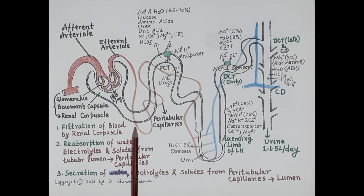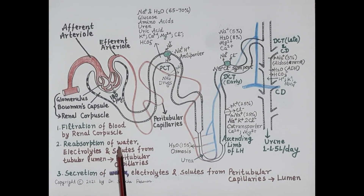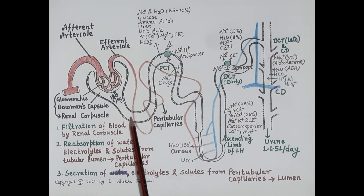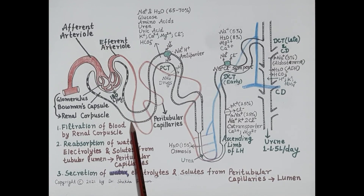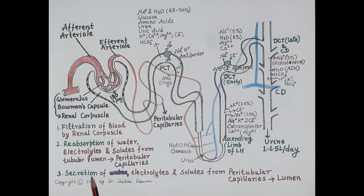This process is called selective reabsorption. Selective reabsorption is the reabsorption of water, electrolytes, and solutes from the tubular lumen into the peritubular capillaries — that is, the substances are reabsorbed back into the circulation.